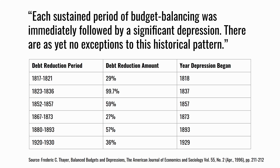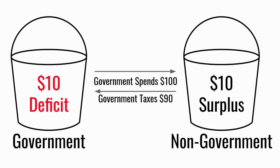MMT economist Frederick Thayer looked at the six largest debt reduction periods in US history and found that without exception, an economic depression shortly followed each one. That doesn't necessarily mean debt reduction caused the depression — correlation isn't causation — but it's certainly suggestive. Because if you turn those cash flows around, a surplus for the government means a deficit for the rest of us, and the government is therefore draining money out of the economy.